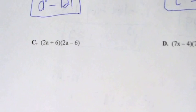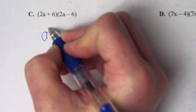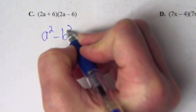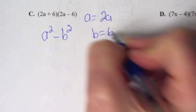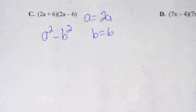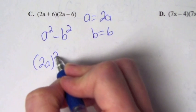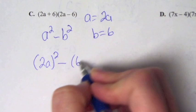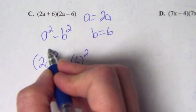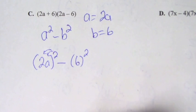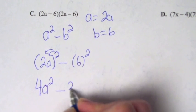For letter C, same thing — a squared minus b squared. A is 2a and b is 6. Plugging those in: (2a) squared minus 6 squared. Don't forget your exponent rules — the exponent distributes to both the 2 and the a. So it becomes 4a squared minus 36.